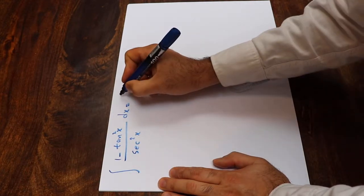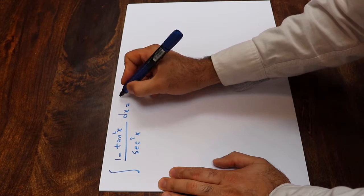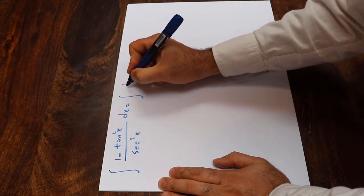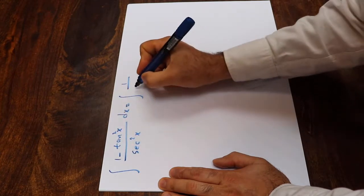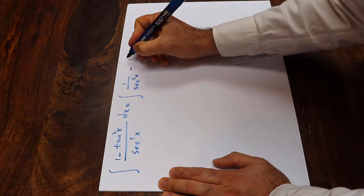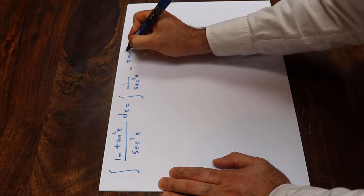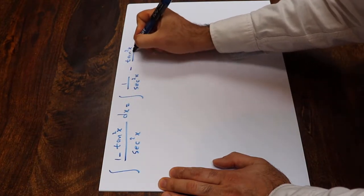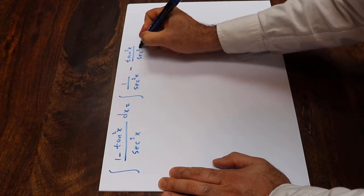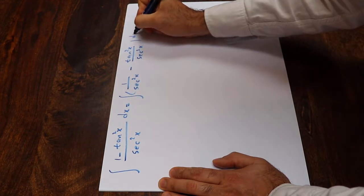This integral you can rewrite it as the integral of 1 divided by secant square x minus tangent square x divided by secant square x dx.